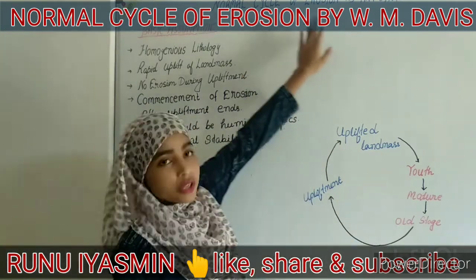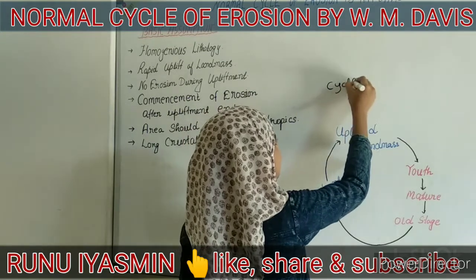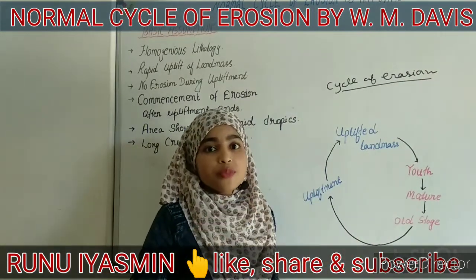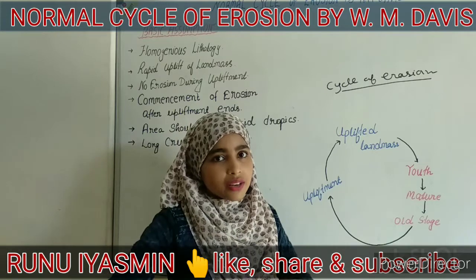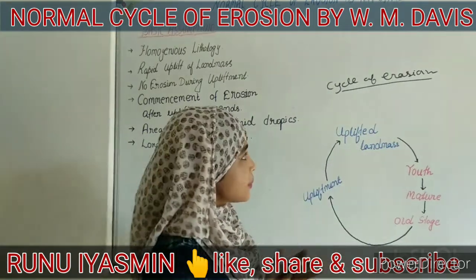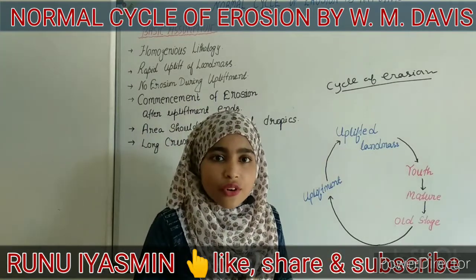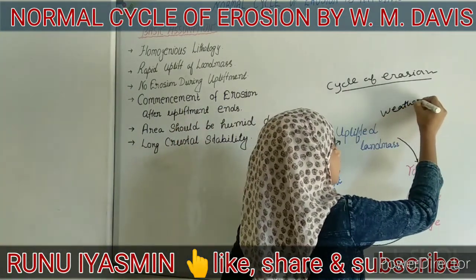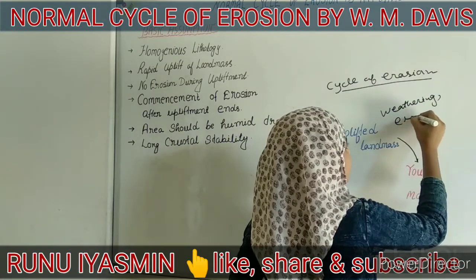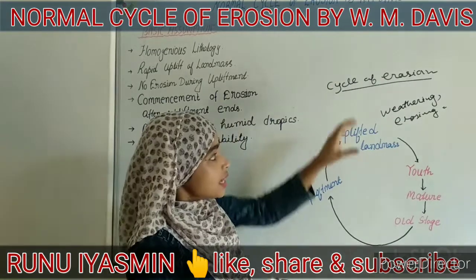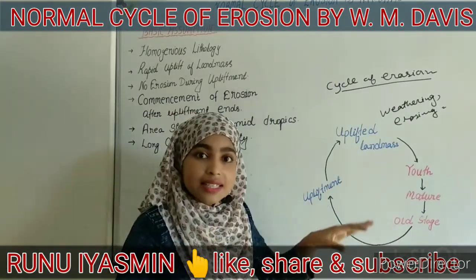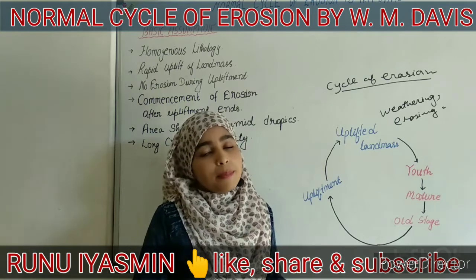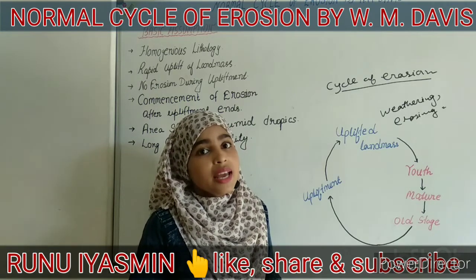In today's session we will be discussing that in more detail, but first let me tell you what is the cycle of erosion. The cycle of erosion denotes the process of changing of landforms in a cyclic manner. Due to the endogenic process a land is uplifted, and due to the weathering and erosion process this uplifted landmass will decrease in height and ultimately become a feature-free plain region, known as peneplain according to W.M. Davis.